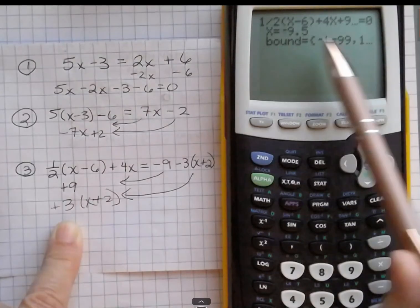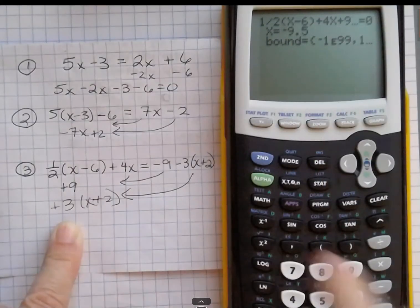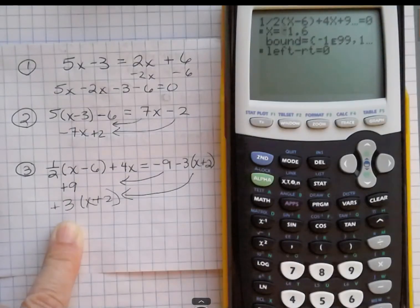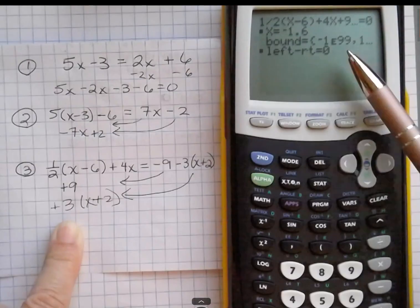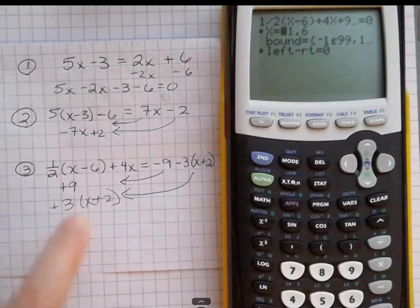Now we're going to enter that. Notice I have my old answer there. It has not been solved yet. Alpha, enter, is going to solve that. And now it's telling me the answer is negative 1.6, and it ran a check and believes that that's to be true.